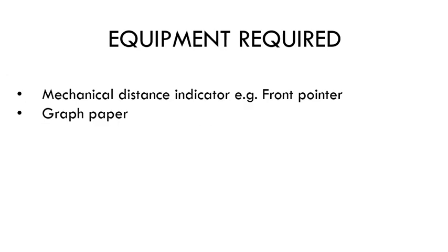The equipment we will need is a mechanical distance indicator. Linear accelerator manufacturers usually provide a front pointer type device which you can place on the linear accelerator — these devices are calibrated for 100 SSD. You will also need a graph paper.